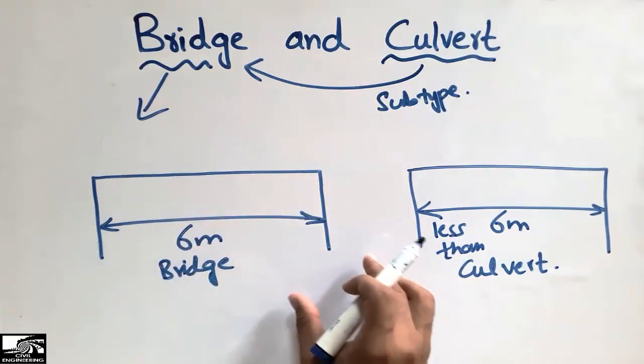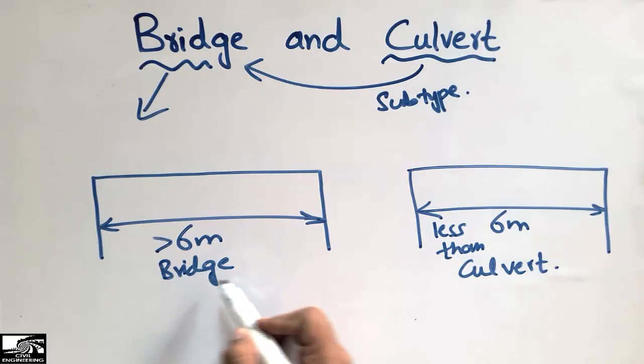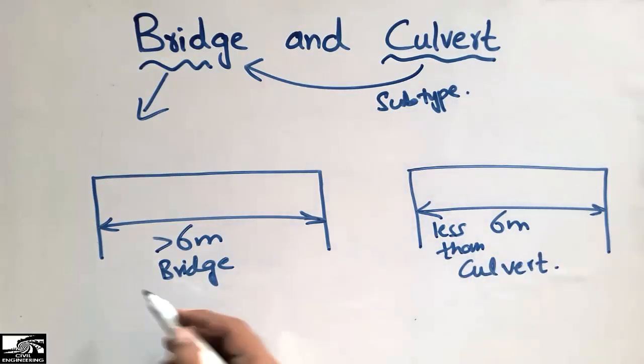When the length is greater than 6 meters we call it bridge, and when the length is less than 6 meters we call it the culvert. The other difference is...